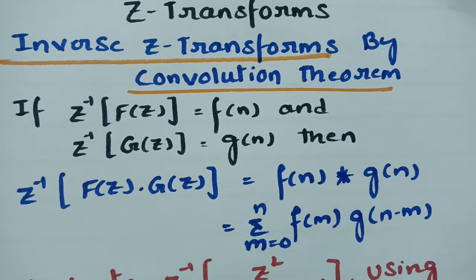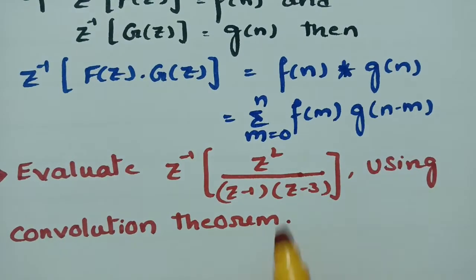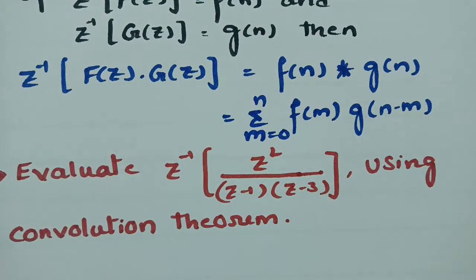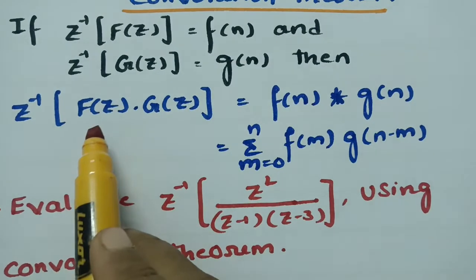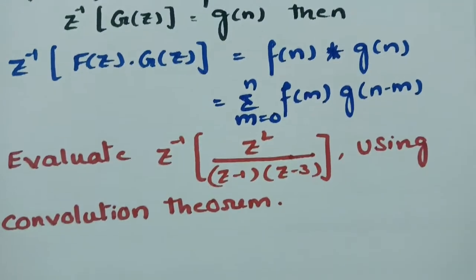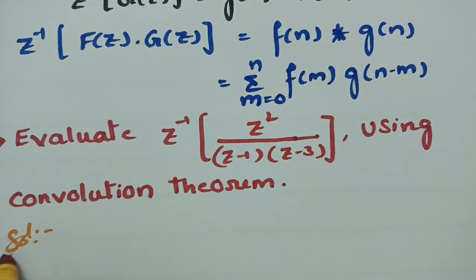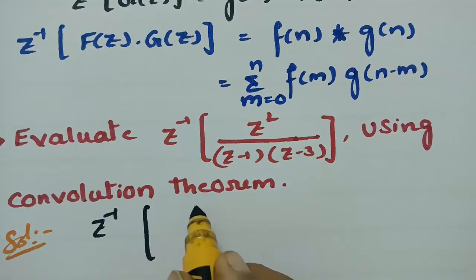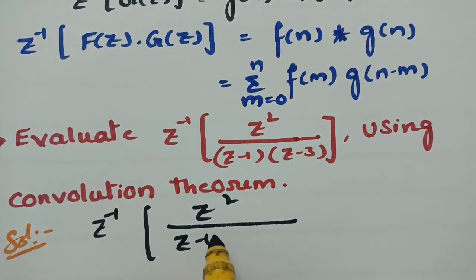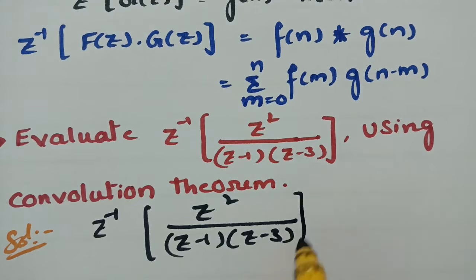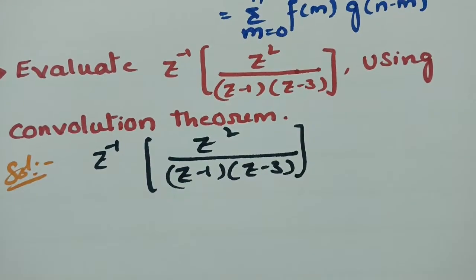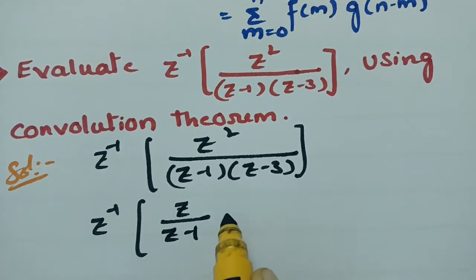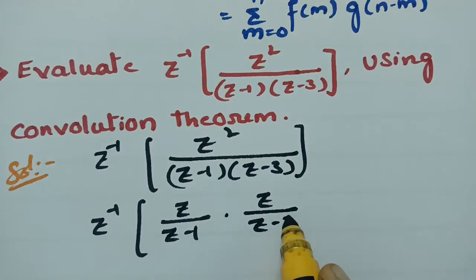Using this convolution theorem, we are going to evaluate Z-inverse of z² / [(z−1)(z−3)]. First, we need two functions: F(z) and G(z). We split z² / [(z−1)(z−3)] as [z/(z−1)] · [z/(z−3)].